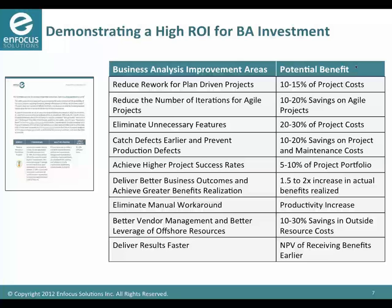First, reduce rework for plan-driven projects. I already told you 28% of cost is average for the industry — very well documented. You're probably not going to be able to save all of that, but some range of 40% to 50% of that is certainly achievable. If you look at that, that's huge — 10% to 15% of project costs. That will pay for a big investment in business analysis, and that's easy to prove.